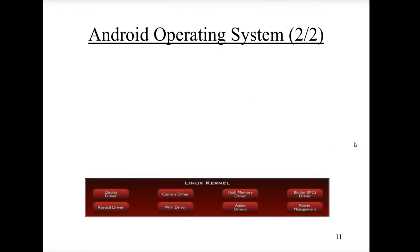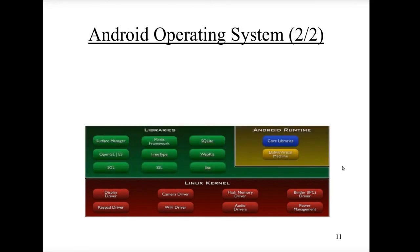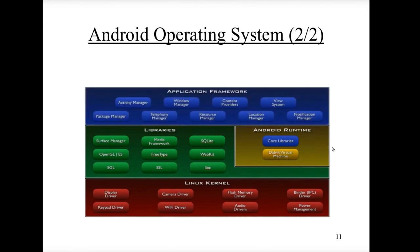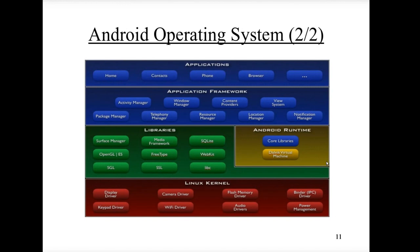The Android architecture can be visualized as layers. At the bottom is the Linux kernel providing drivers for hardware and sensors. On top of that are open-source libraries and the Android Runtime — the Dalvik virtual machine was the old runtime and is no longer supported. Above that is the application framework providing programming interfaces for device features, and on top of that are pre-installed applications such as phone, contacts, and browser.